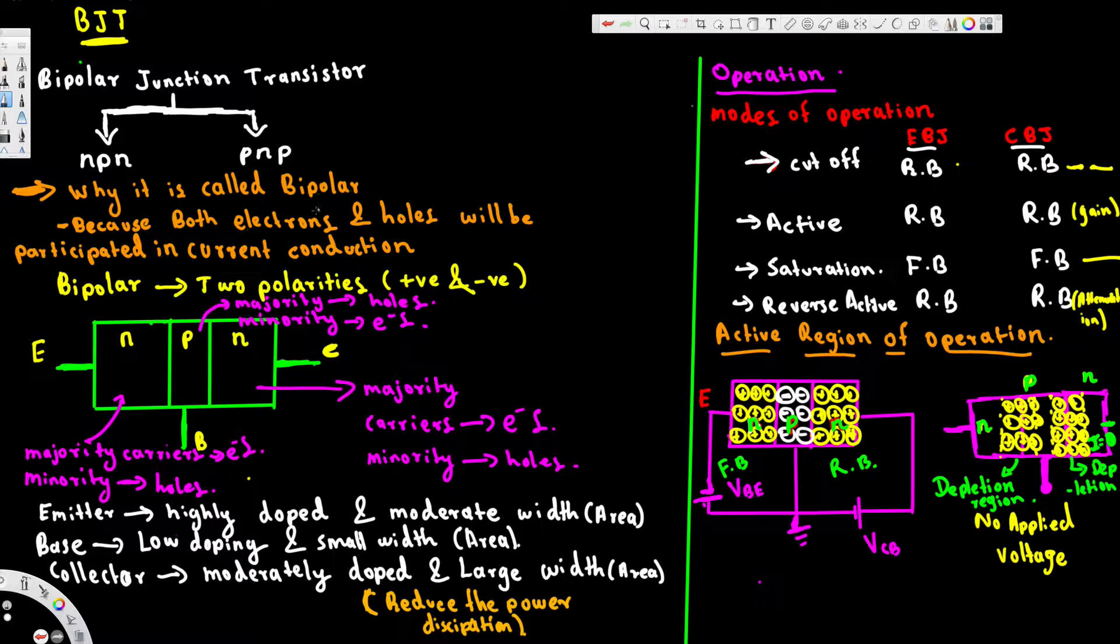Now let's see why it's called bipolar. Bipolar means we have two polarities, positive and negative, because we have electrons and holes. Electrons are negative, holes are positive. Because both electrons and holes are participating in current conduction, we call this bipolar.